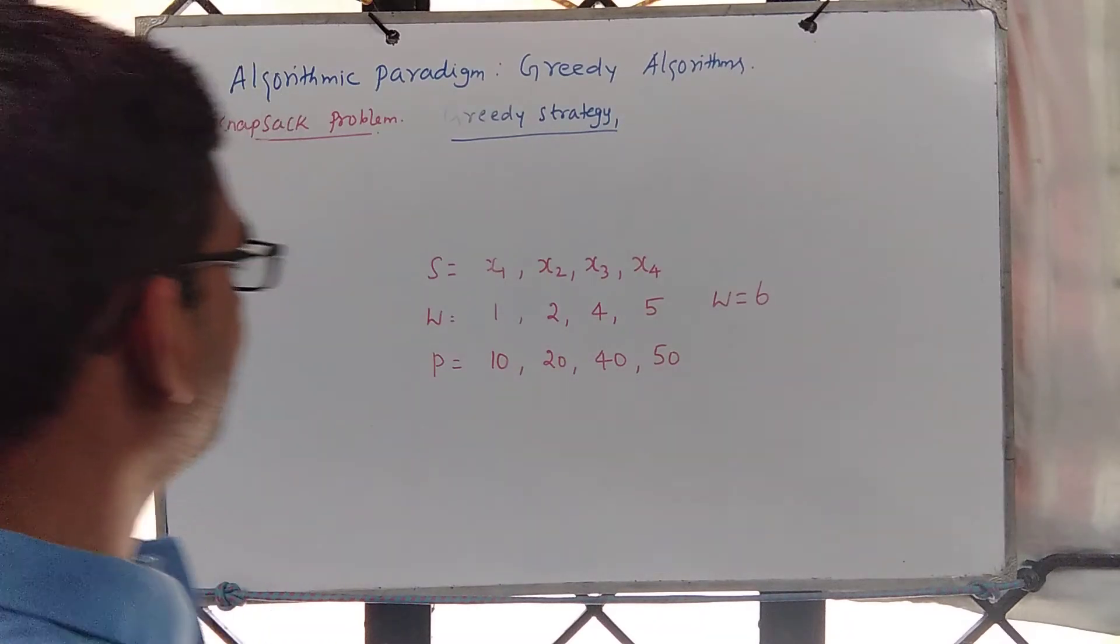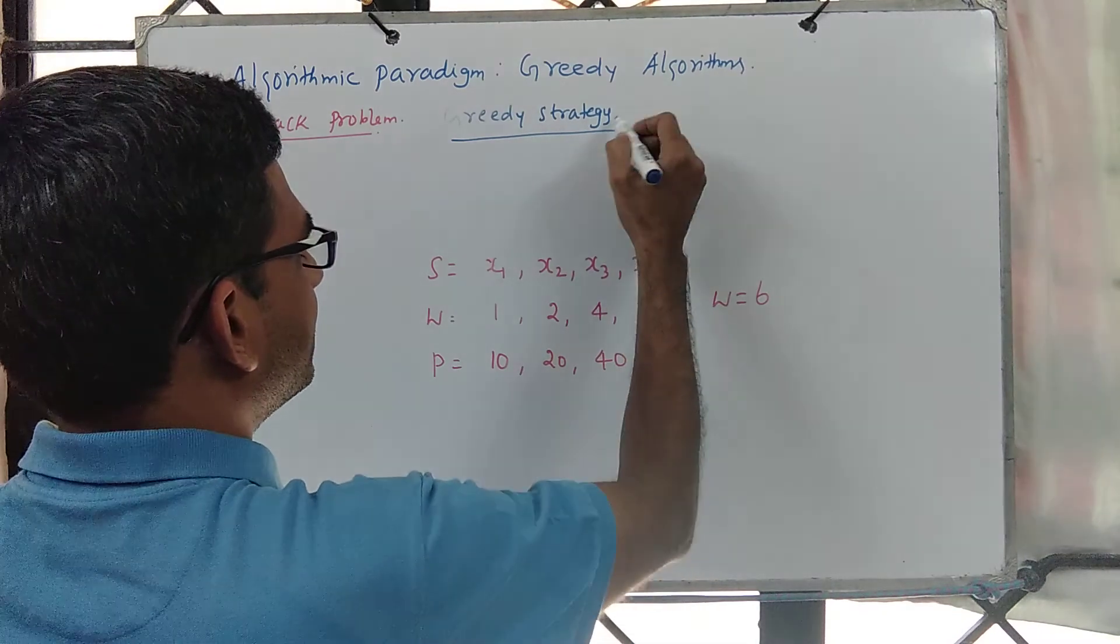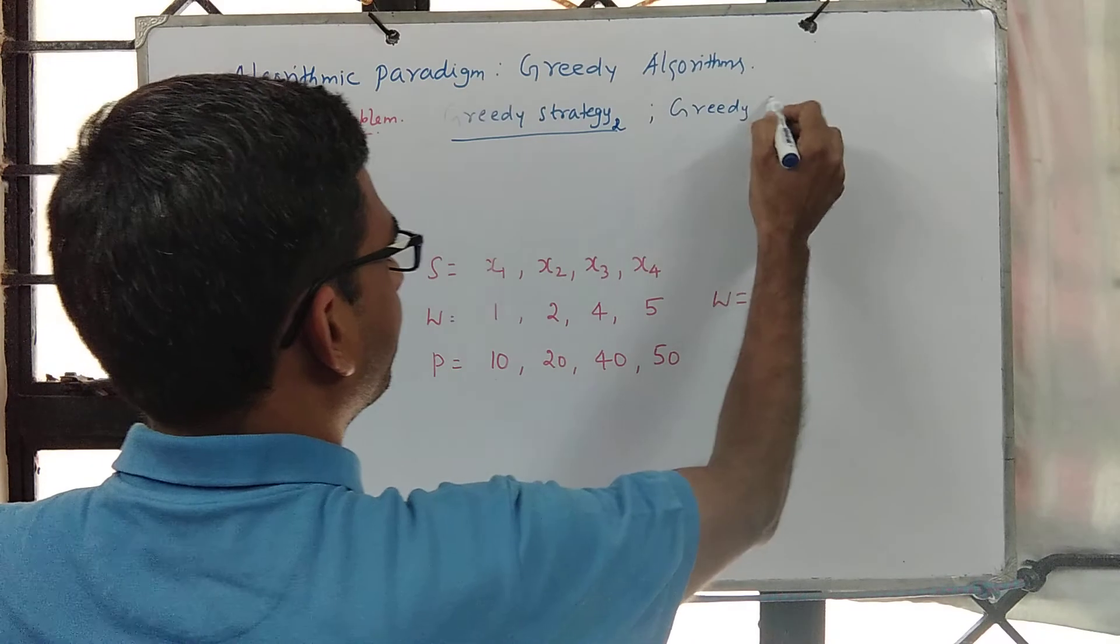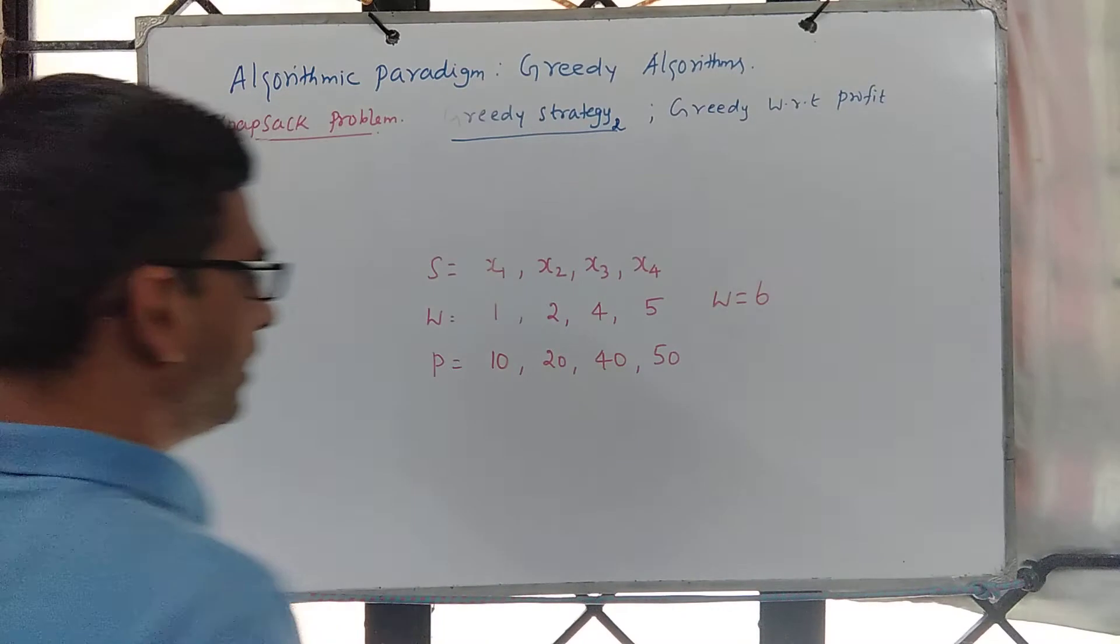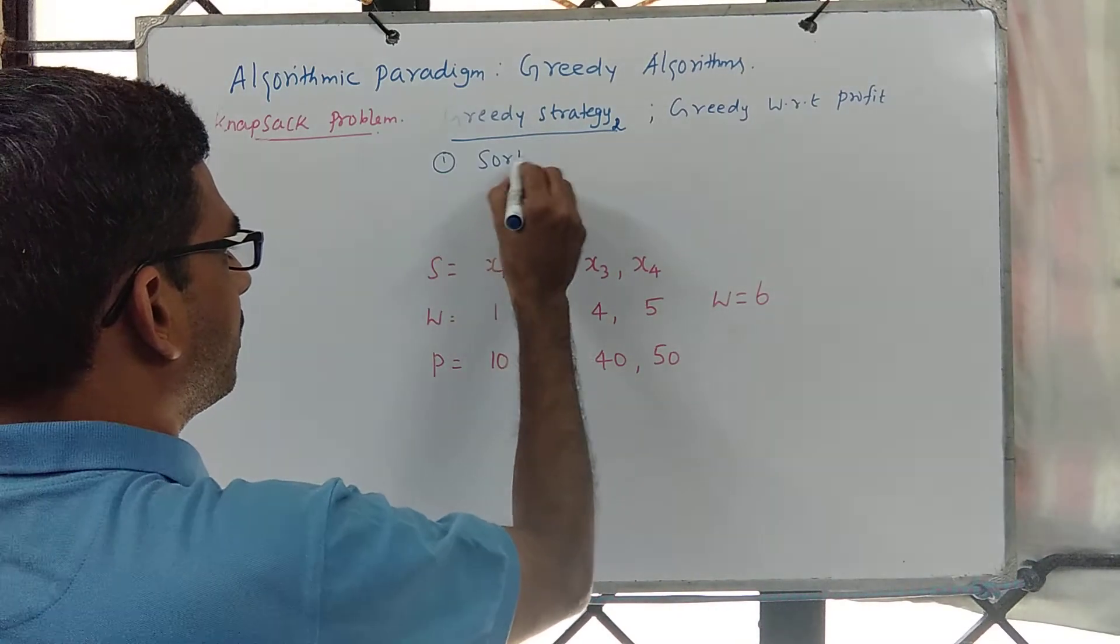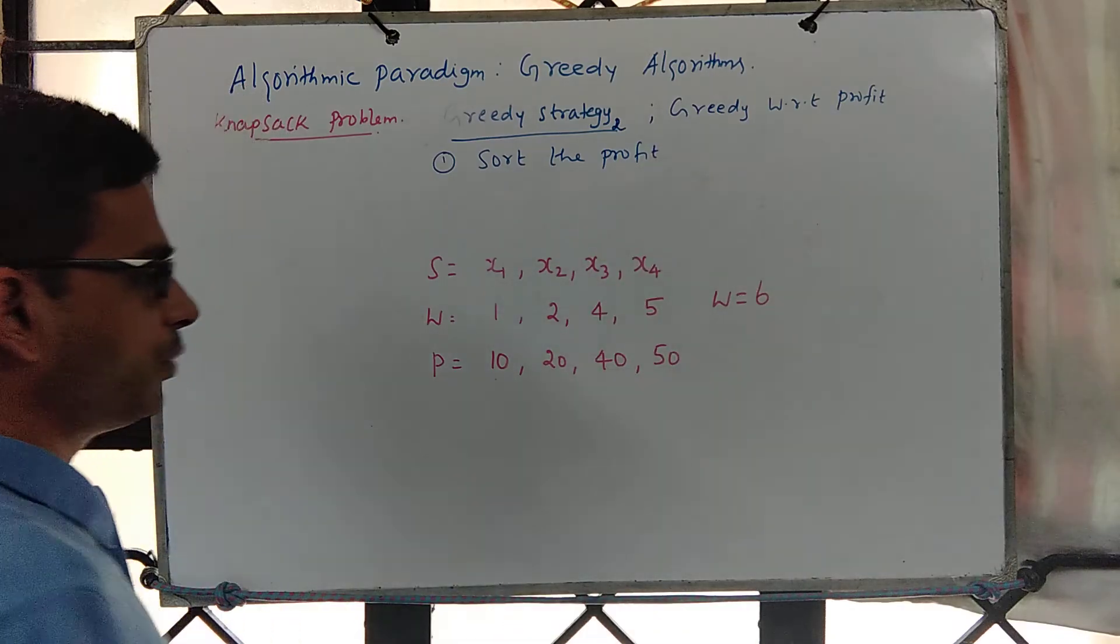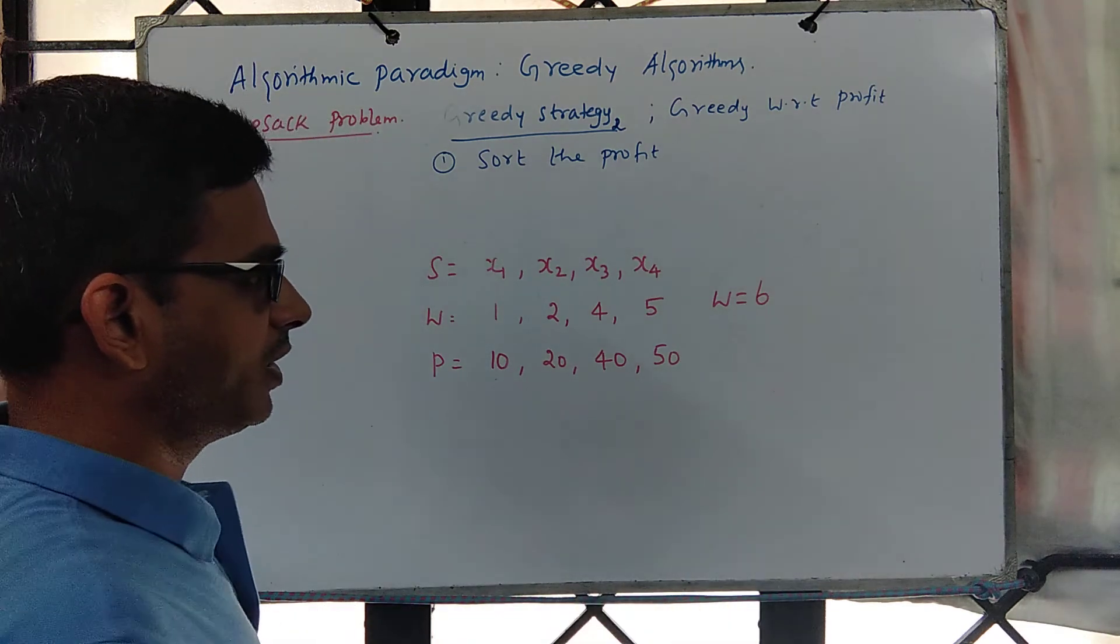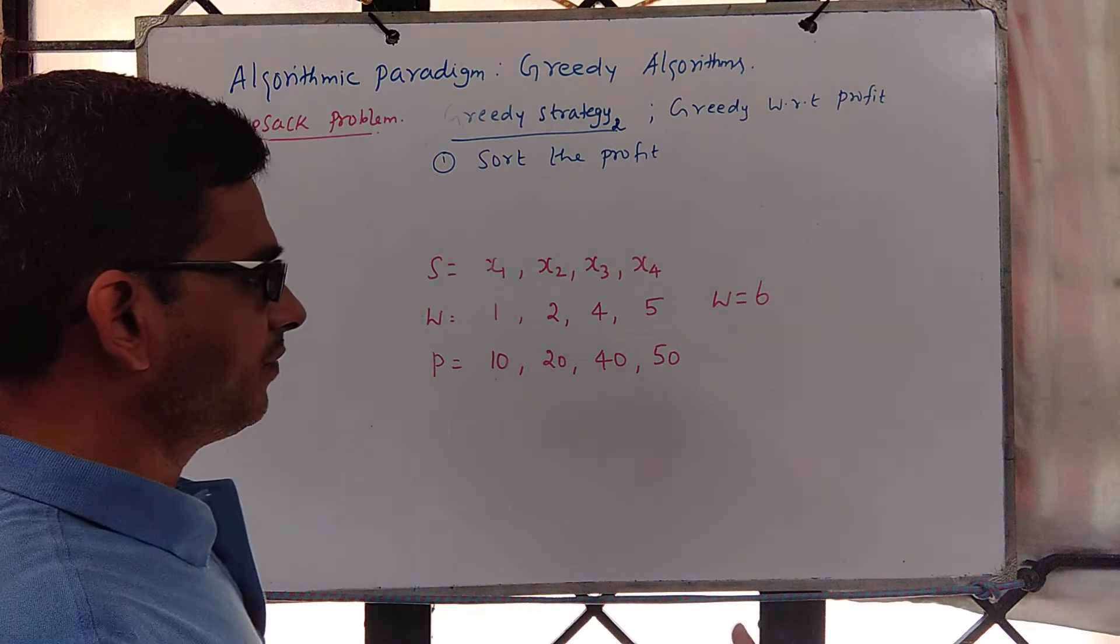Let's try one more strategy. Our greedy strategy 2 is greedy with respect to profit. We are going to sort the profit array because intuitively we think including an object of maximum profit and second maximum profit will slowly take us to a global solution where we have a subset s prime whose profit is maximum.